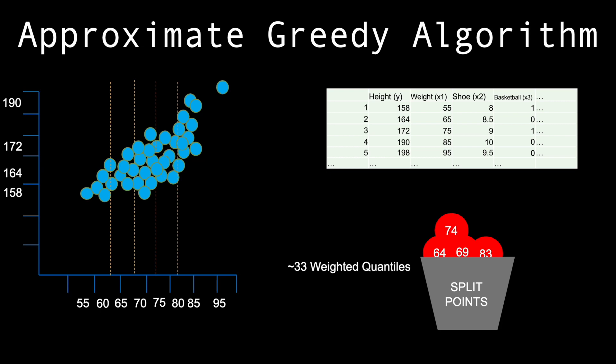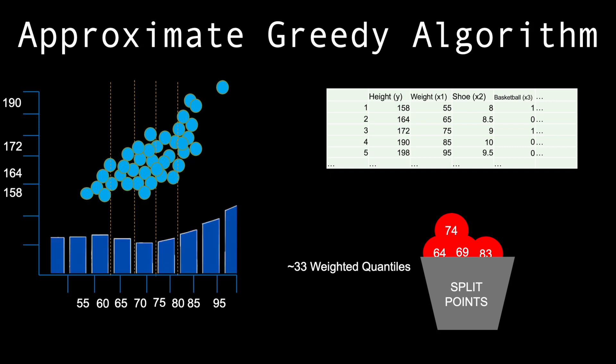Heuristically, good spacing between quantiles of data points leads to better split points, as each weighted quantile should contain similar elements. This is called the approximate greedy algorithm, and we usually evaluate around 33 weighted quantiles before making a final decision.